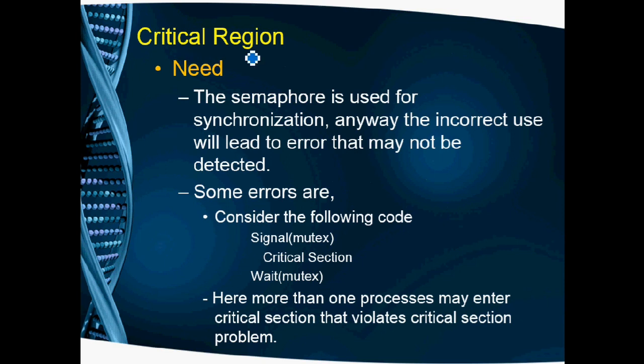Now we will go to the next topic, critical region. Normally for synchronization we use semaphores, but semaphores use wait and signal operations. If we incorrectly use these operations or misuse them, that leads to some error. If we use them wrongly in our program, it may not be detected. So to avoid this, we are going for critical region. Let's see some examples of how errors occur in the coding.